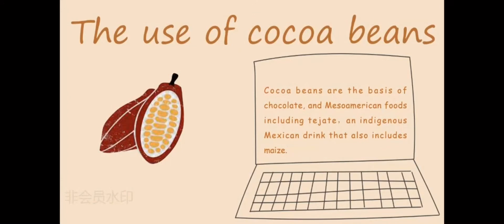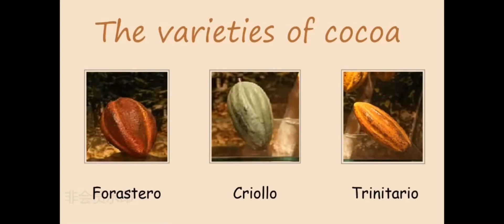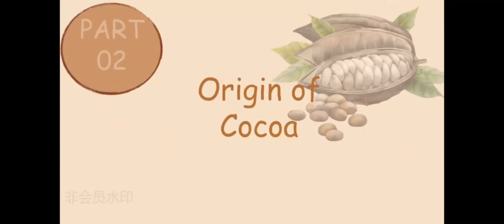The three main varieties of cocoa plants are Forastero, Criollo, and Trinitario. What's more, if you have tasted cocoa before, will you care about the origin of the cocoa?